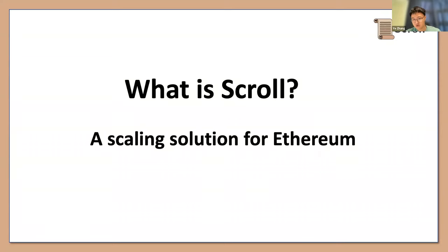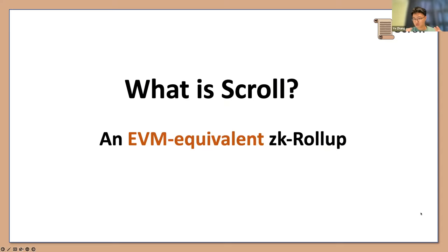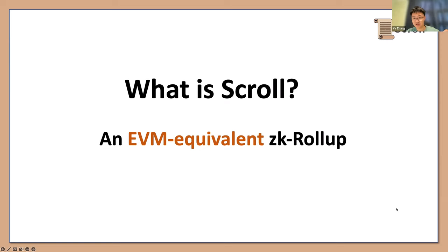Scroll is a scaling solution for Ethereum. We are building a general-purpose Layer 2 platform that inherits security from Ethereum but can be much cheaper, faster, with higher throughput. More specifically, we are building something called an EVM-equivalent ZK-Rollup. It's considered the most secure scaling solution based on zero-knowledge proof, and we can support EVM inside our ZK-Rollup. Developers can reuse all the toolings around, and the development experience will be exactly the same as Ethereum mainnet.